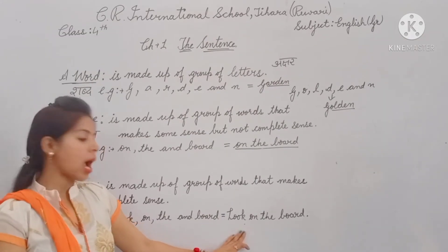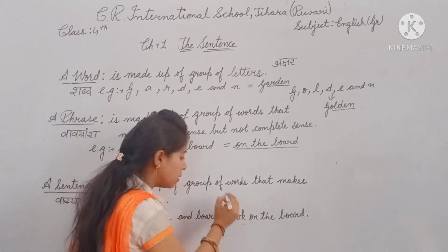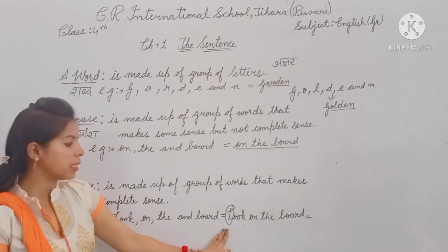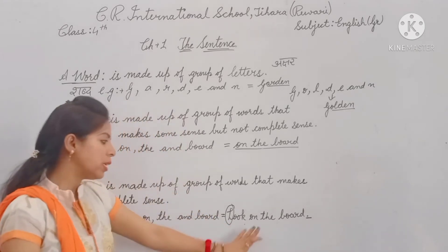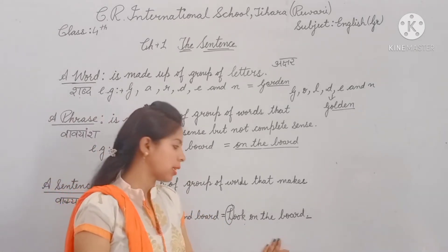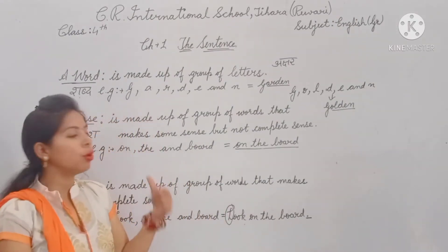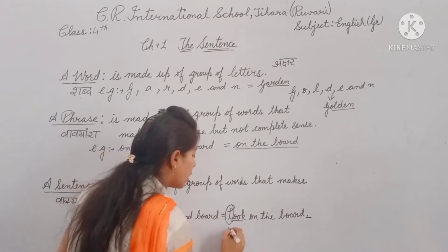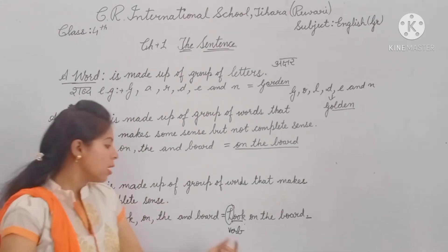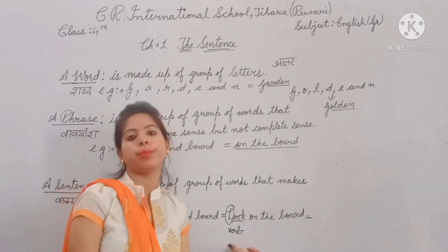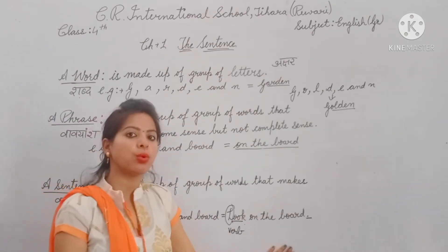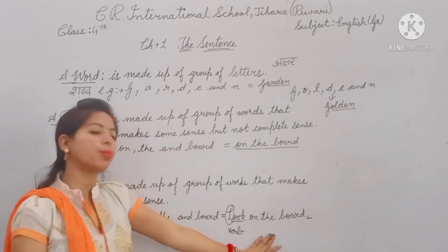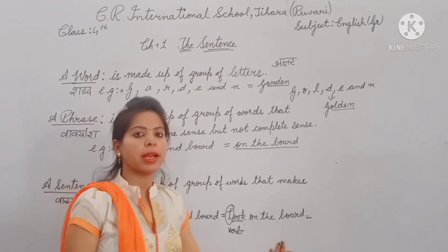A sentence starts with a capital letter and ends with a full stop. It gives us a complete meaningful sense. 'Look on the board' — here 'look' is our verb. A sentence needs a verb to be complete; without a verb, a sentence is not complete. A phrase is where there is no verb. Where a group of words has a verb, that becomes a sentence.